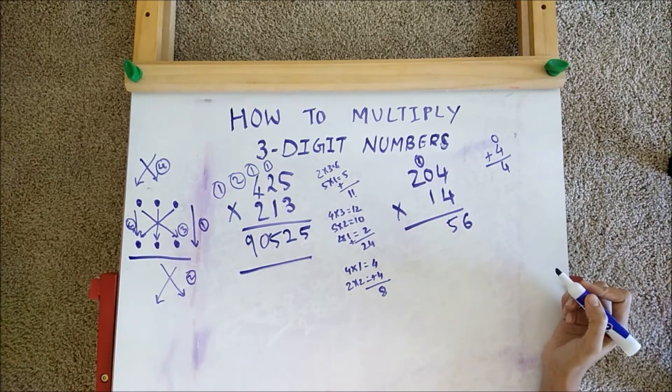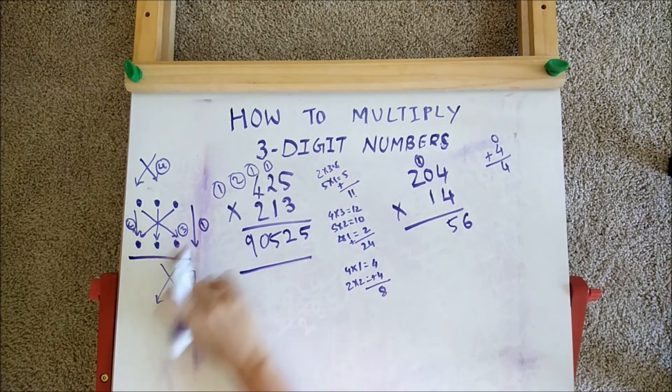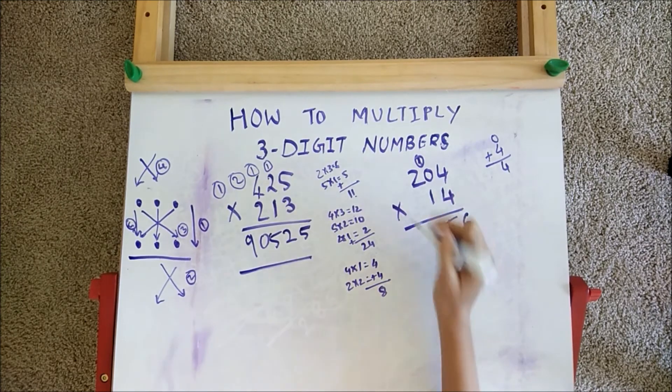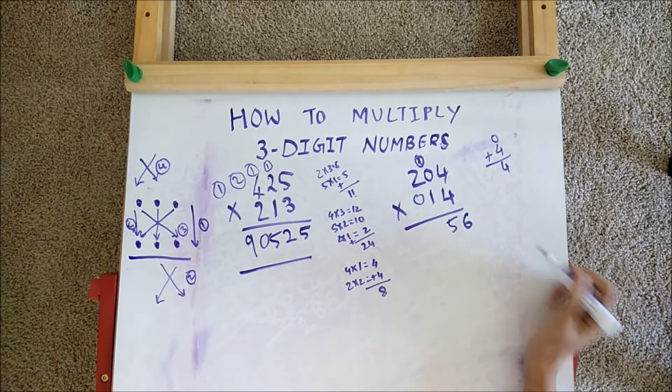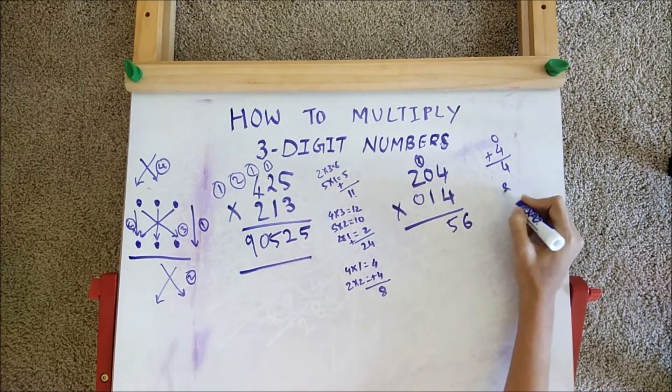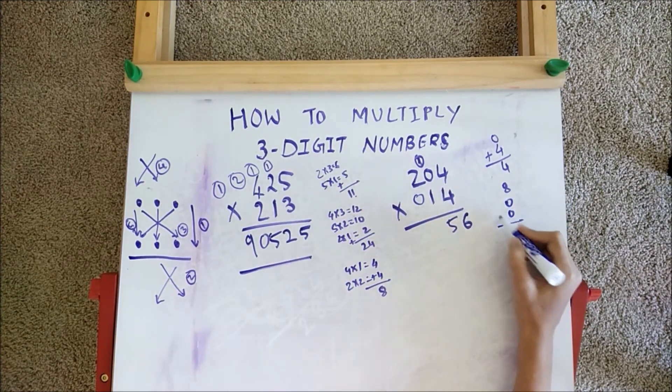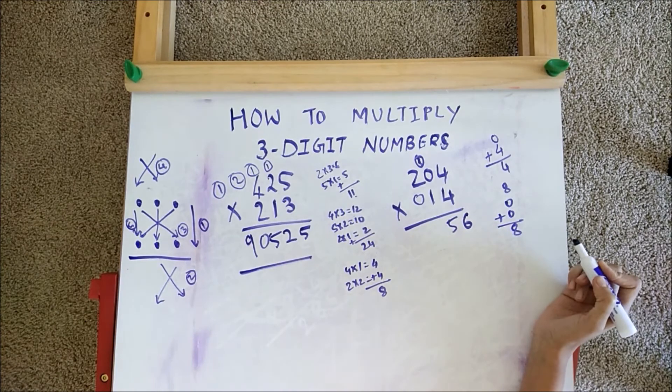In step 3, we cross multiply all the three digits. But we don't have anything, nothing means 0. So 2 times 4 is 8, 0 times 4 is 0, 0 times 1 is 0. Adding those we get 8.